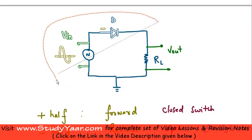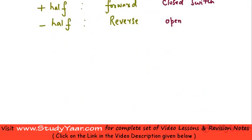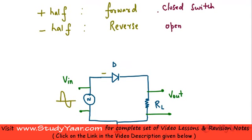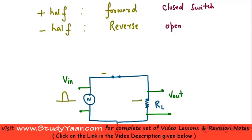Let me copy this circuit and paste it below. Let's see what happens in the positive half. In the positive half, my diode looks like a closed switch. So, I am simply going to take this diode and have a closed switch here. Since I have a closed switch, this entire potential is going to be available across my load resistor. Therefore, my V out is also going to be like this.